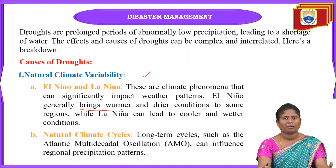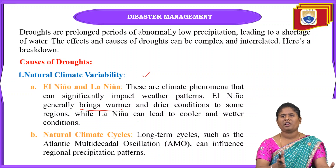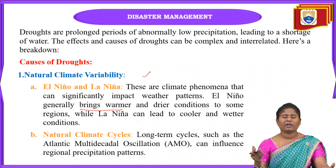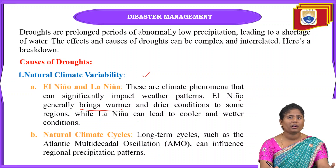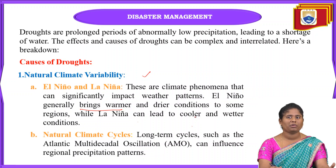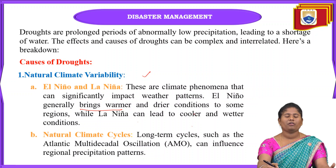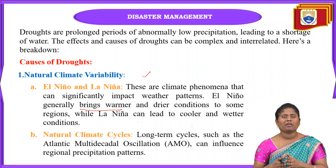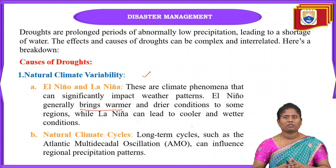To clarify: El Niño gives warm and dry conditions, while La Niña gives the opposite — cooler and wetter conditions. By these two contrasting conditions, they give rise to the causes of droughts.